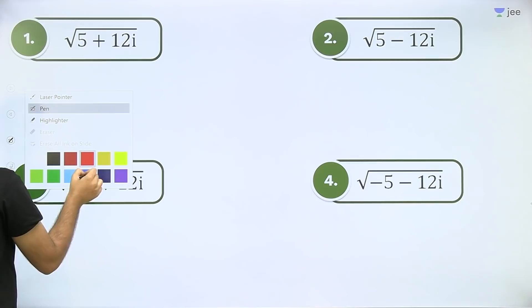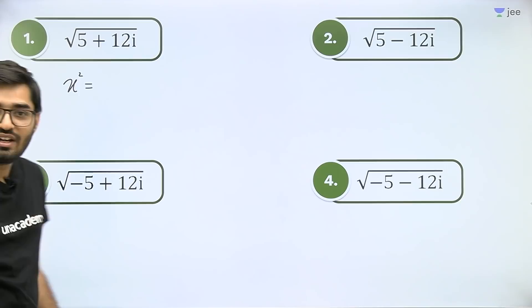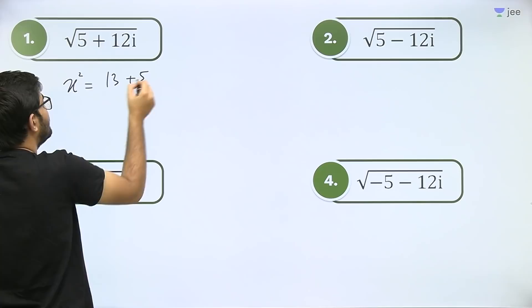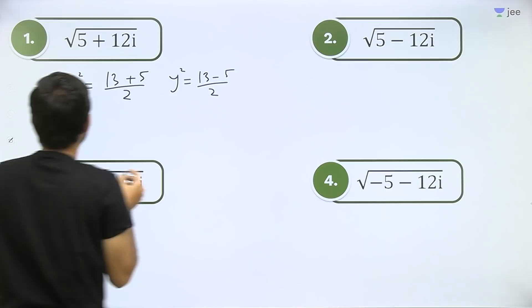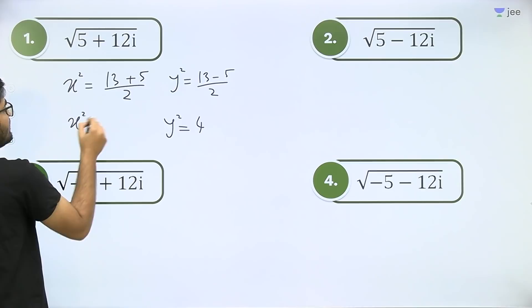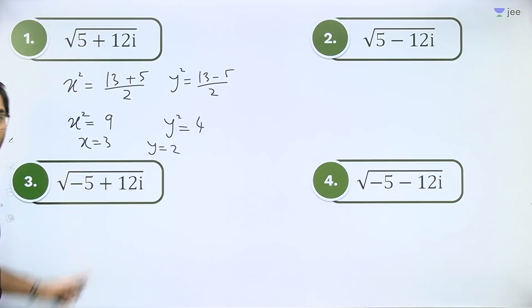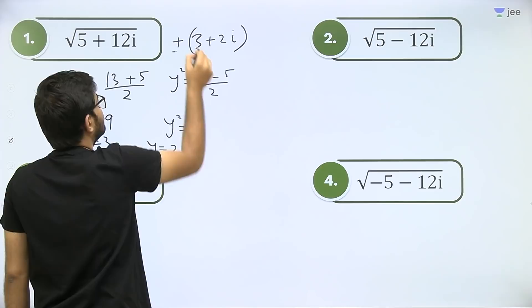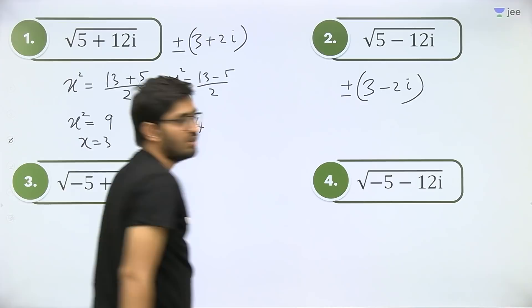Let's do one more question. For x²: under root of 5² + 12² = 13. So x² = (13 + 5) / 2 = 9, and y² = (13 − 5) / 2 = 4. So x = 3 and y = 2. Sign in between is plus, so ±(3 + 2i) — this is the answer. And for the one with minus in between: ±(3 − 2i) — this is the answer.